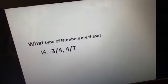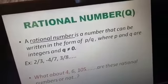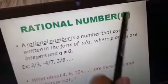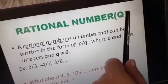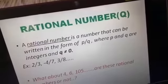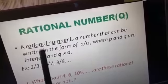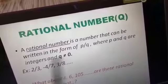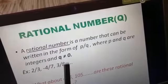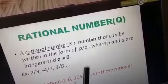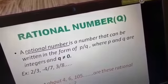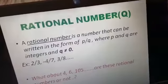Actually, these are a different type of numbers called rational numbers, which is denoted by Q. A rational number is a number that can be written in the form of P by Q, where P and Q are integers and Q is not equal to 0. Examples are 2 by 3, minus 4 by 7, 3 by 8, etc.